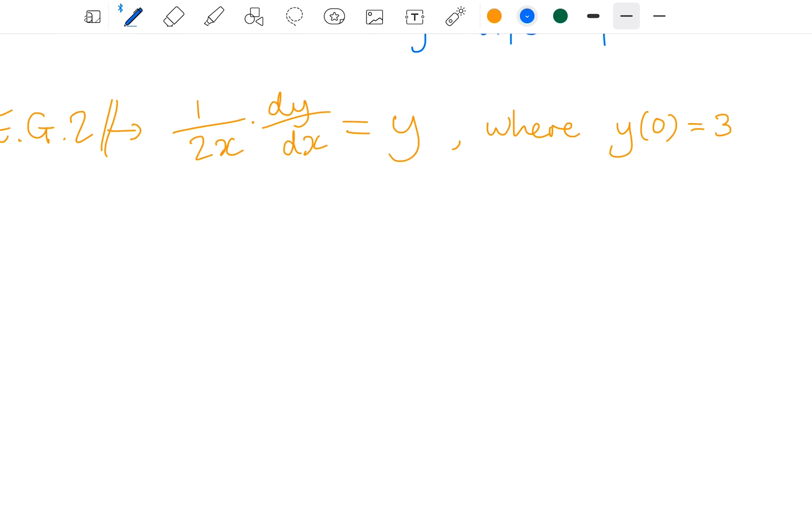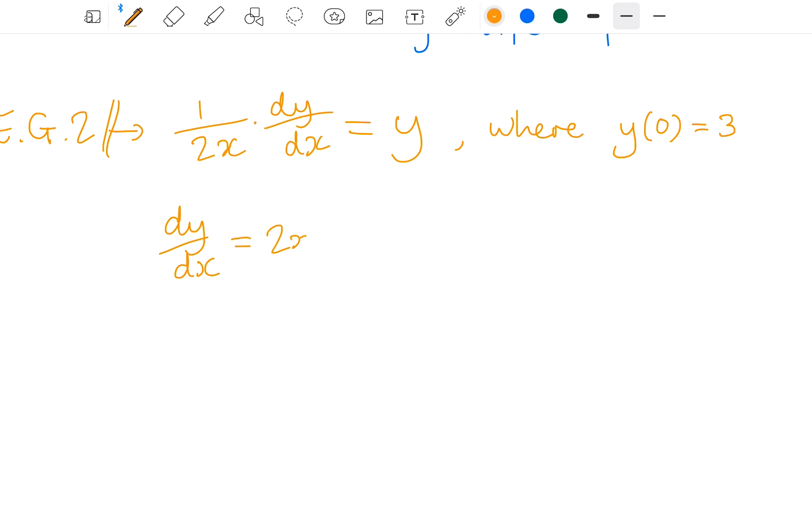Next. Again, not immediately in the correct form. I think I'm definitely going to need to move this 2x to the right. If I divide by y, I get this. And I'm going to multiply by dx. And now I'm at my stage where I can integrate both sides.